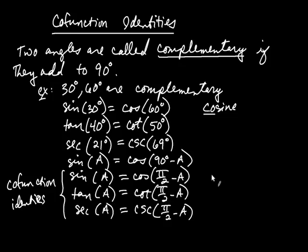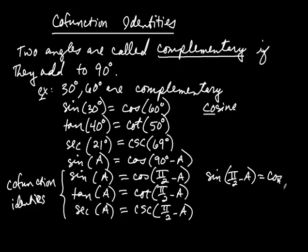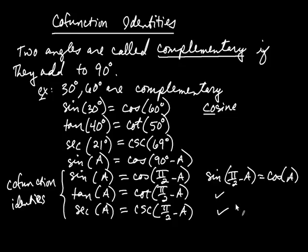The pi over 2 minus a can appear on either side of the equation, and the same is true for the other cofunction pairs as well.